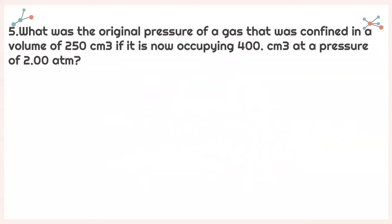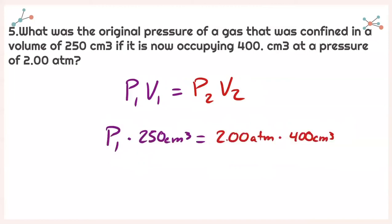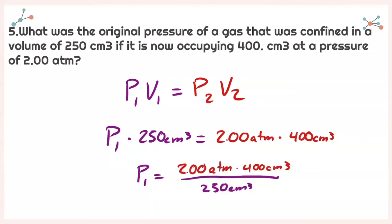For number 5, it asks: what was the original pressure of a gas confined in a volume of 250 centimeters cubed, if it is now occupying 400 centimeters cubed at a pressure of 2.00 atmospheres? Same equation: P1 times V1 equals P2 times V2. Plugging in to identify the unknown — I'm solving for P1. Isolating P1 and plugging into my calculator, with sig figs I get 3.20 atmospheres as my initial pressure.